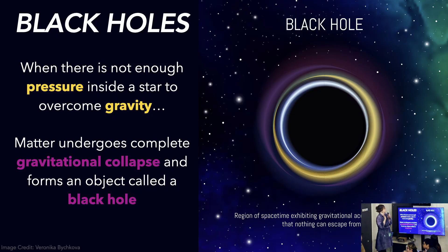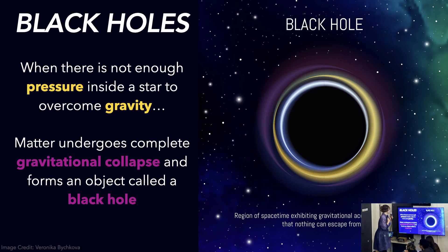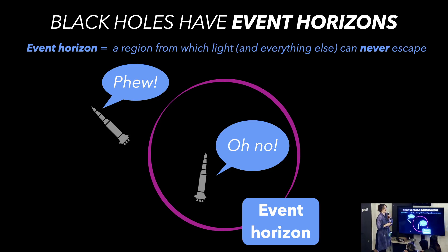First of all, we need to make sure we're all on the same page about what a black hole is. When you have a really massive star that reaches the end of its life, the fusion processes in the star and the gas pressure aren't so strong anymore. There's basically no pressure to resist gravity, and the whole thing collapses — that's a black hole. It's a complete gravitational collapse. One of the things everyone knows about black holes is that there is a region called the event horizon from which light can never escape. That's why it's called black — there's no way that light can escape from this inner region.